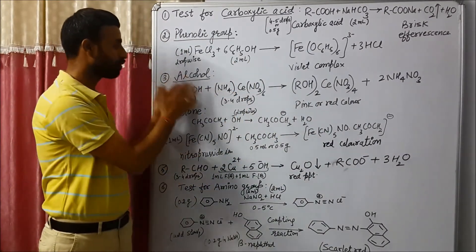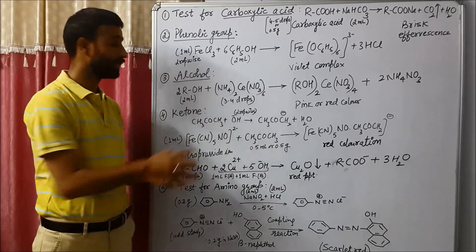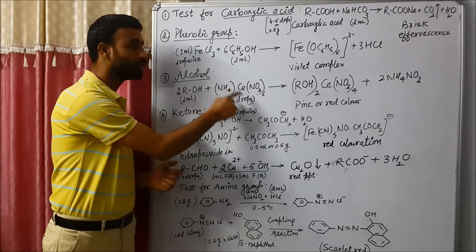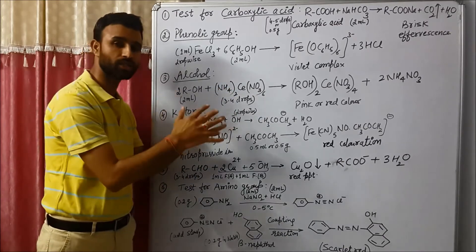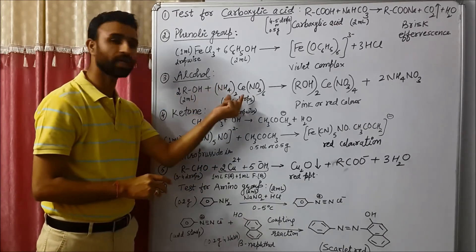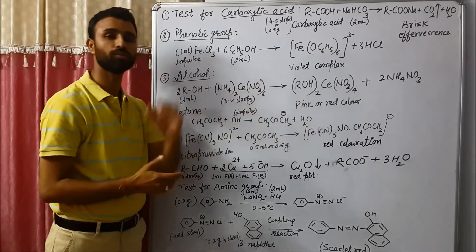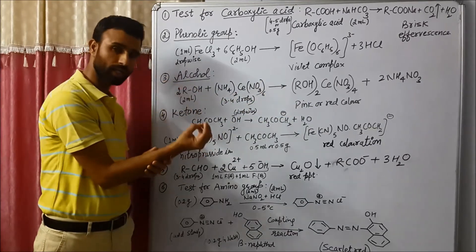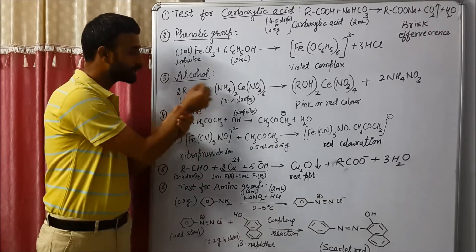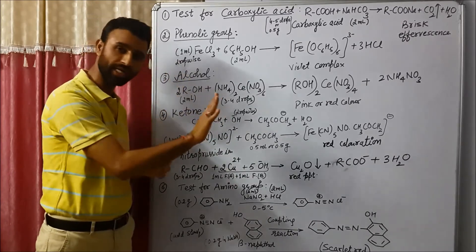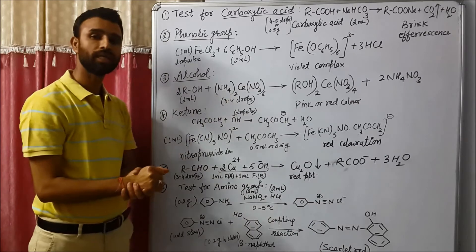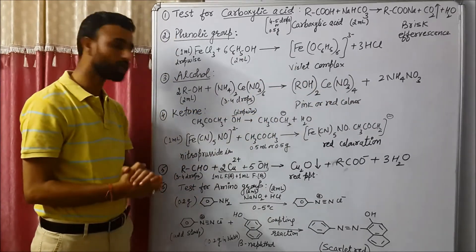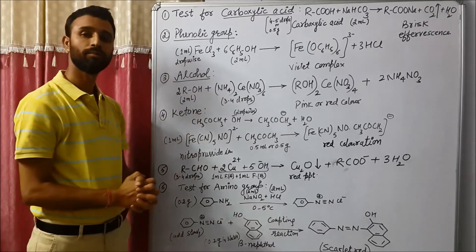But in this case, keep in mind, don't add ceric ammonium nitrate in excess. If you add this in excess, then color is not observed. So keep in mind, take 2 ml organic liquid, just add 3 to 4 drops only of ceric ammonium nitrate. And if pink or red color complex is observed, your alcohol is present.